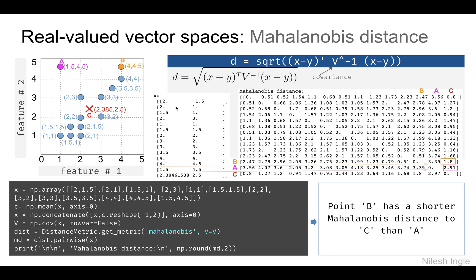All these points can be represented by a matrix X with two columns — the first column representing feature one and the second column representing feature two — with the centroid added as the last data point. When we calculate the Mahalanobis distance we get an output matrix. Looking at the last three rows and last three columns of this matrix, the distance for point A is in one row and if we look all the way to the right, its Mahalanobis distance from point C is 2.97, whereas for point B that distance is 1.8. This confirms that Mahalanobis distance takes into account the variability and its direction.